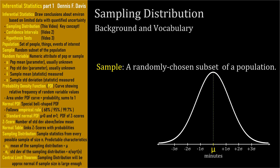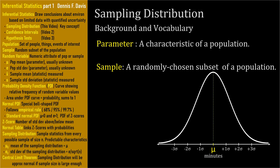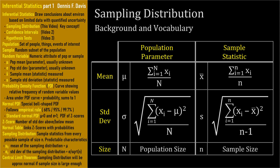A sample is a randomly chosen subset of the population, and we examine, measure, or evaluate the random variable of its members. The sample has characteristics like a population does — a population's characteristics are called parameters, and a sample's characteristics are called statistics. The size of the population is denoted by uppercase N, and the size of the sample is lowercase n. Samples are smaller than populations, so that should be easy to remember.